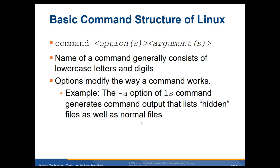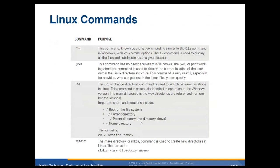Basic Linux commands have a command name, options, and arguments. The name consists of lowercase letters and digits. Options modify how the command works — for example, the dash-a option of the ls command generates a list of hidden files as well as normal files. Some common commands: ls (list), pwd (print working directory — shows you where you are if you get lost in the command line), and cd (change directory).